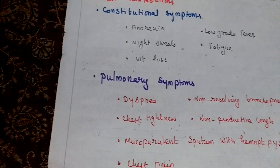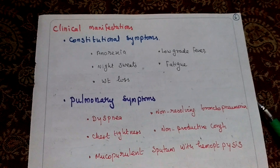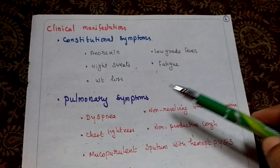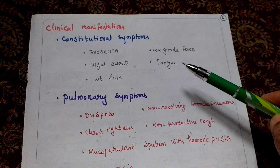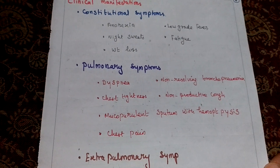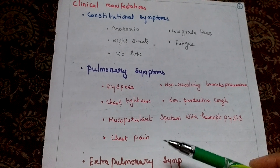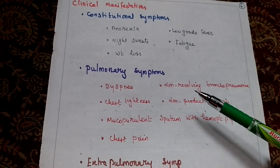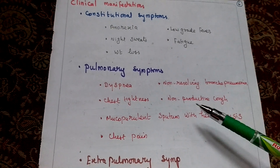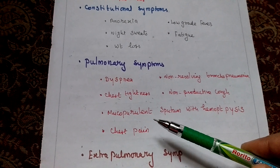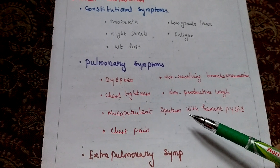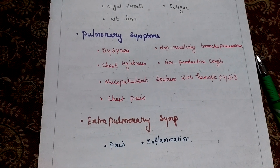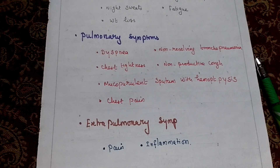Clinical manifestations include constitutional symptoms such as anorexia, night sweats, weight loss, low-grade fever, and fatigue. Pulmonary symptoms include dyspnea, chest tightness, non-resolving bronchopneumonia, non-productive cough, mucopurulent sputum with hemoptysis, and chest pain. Extra-pulmonary tuberculosis presents with pain and inflammation in the affected areas.